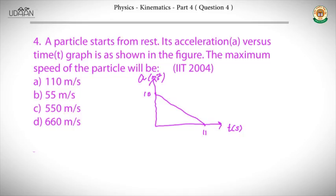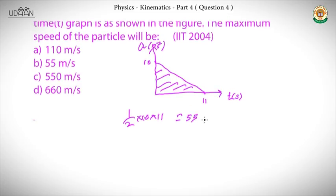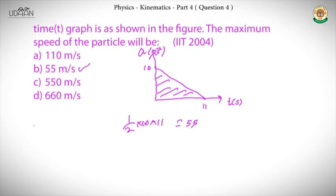The particle starts from rest, so at t = 0 the speed is zero. After t = 11 seconds, we find the area: ½ × 10 × 11 = 55. That change in velocity equals 55. Since the initial speed is zero, the final speed is 55, which is the maximum possible positive change. The answer is B. The area under the acceleration-time graph gives the change in velocity — a simple concept, no need to work hard.